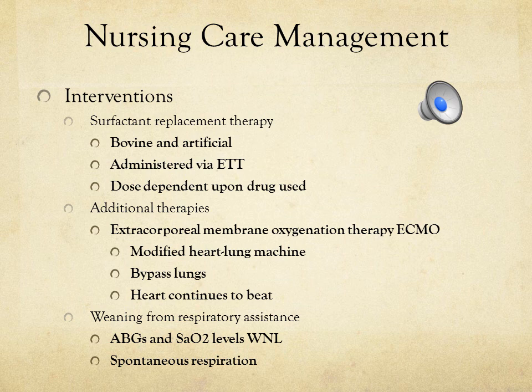During weaning from respiratory support, O2 levels are constantly monitored using pulse oximetry, transcutaneous partial pressure of oxygen monitoring, and arterial blood gases. Weaning begins when arterial blood gases and O2 sat levels are within normal limits and the baby can establish spontaneous ventilation sufficient to maintain acid-base balance.